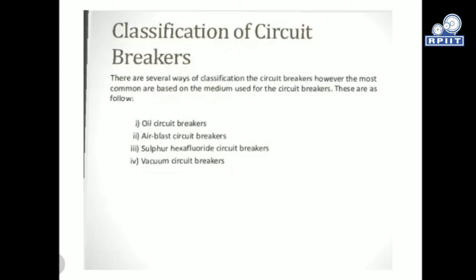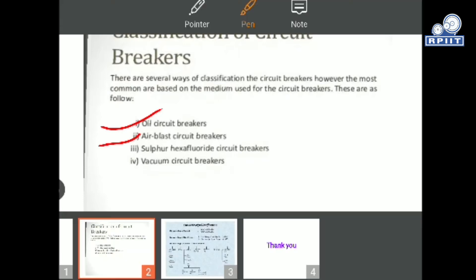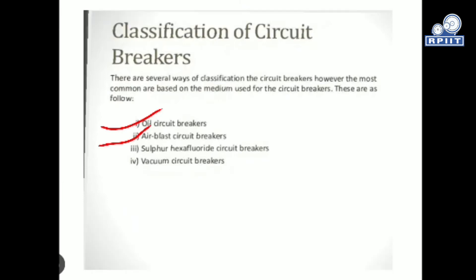Depending upon the medium, circuit breakers are divided into four major categories. The first one is the oil circuit breaker, then air blast circuit breaker, third is the sulfur hexafluoride (SF6) circuit breaker, and the last is the vacuum circuit breaker. These are the four main categories of circuit breakers used nowadays.